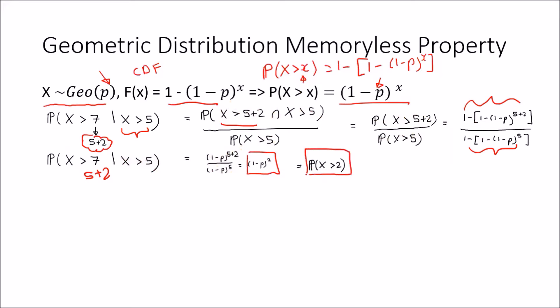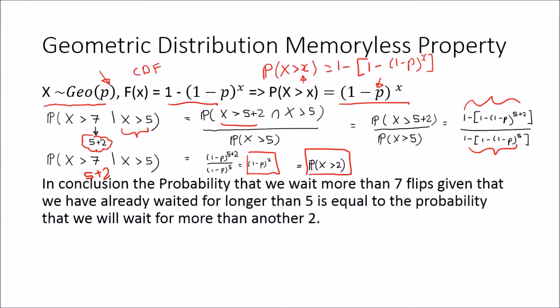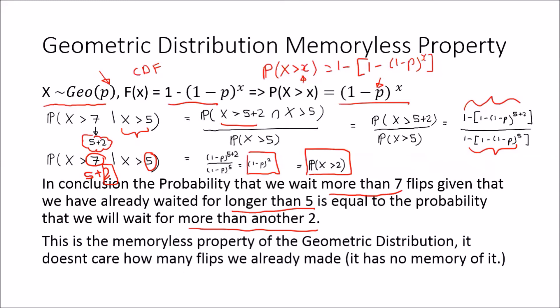And this is the same as the probability that we have to wait more than two trials. This tells us that the probability we wait more than seven flips, given we've already waited longer than five, is equal to the probability that we will have to wait more than another two flips. It means this sequence of flips doesn't care — when we are conditioning, it doesn't matter how long we've waited already. The amount of time we still have to wait depends only on the difference between the intervals, seven minus five, which is two. So this is the memoryless property of the geometric distribution — it has no memory of flips already made.